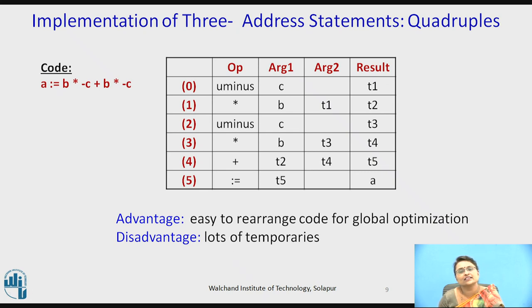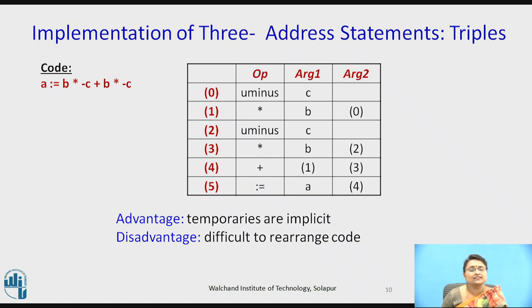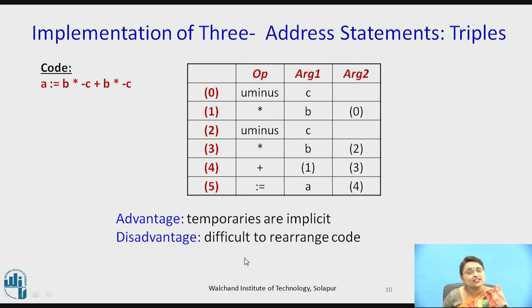Triples have only three fields: operator, argument1, and argument2. There is no explicit result field — temporaries are implicit, represented by the statement's position index. The advantage is that temporaries are implicit, but the disadvantage is that the code is difficult to rearrange because results are not stored explicitly.